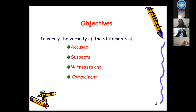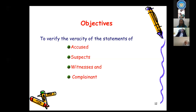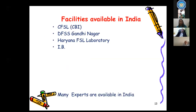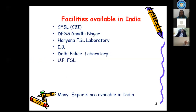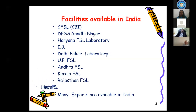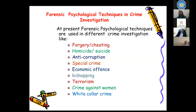Suppose a witness has given a statement: 'I was present there and in front of me this happened.' How do we verify that? Every time physical evidence and material evidence is not available; only the subject gives verbal testimony. With forensic psychological technique, we can check the veracity of that statement. This facility is available in CFSL Gandhinagar, Haryana, I.B., Delhi Police Laboratory, UP, Andhra, Kerala, Rajasthan, Himachal, and many other laboratories across India.